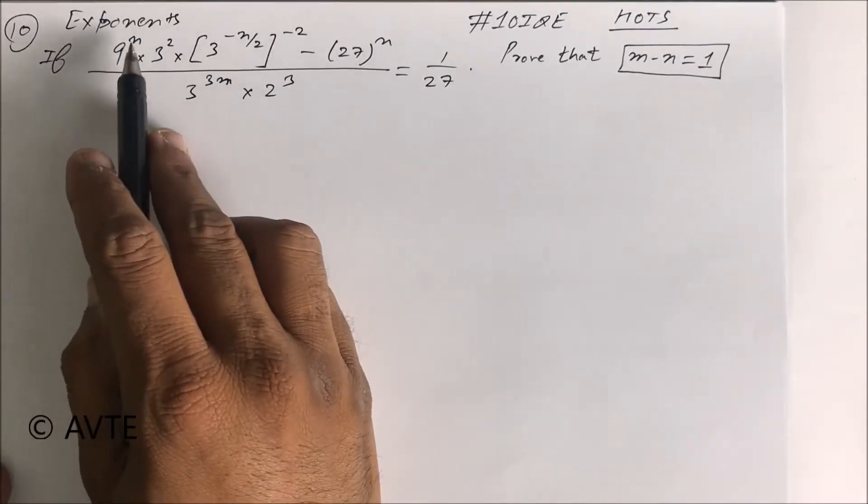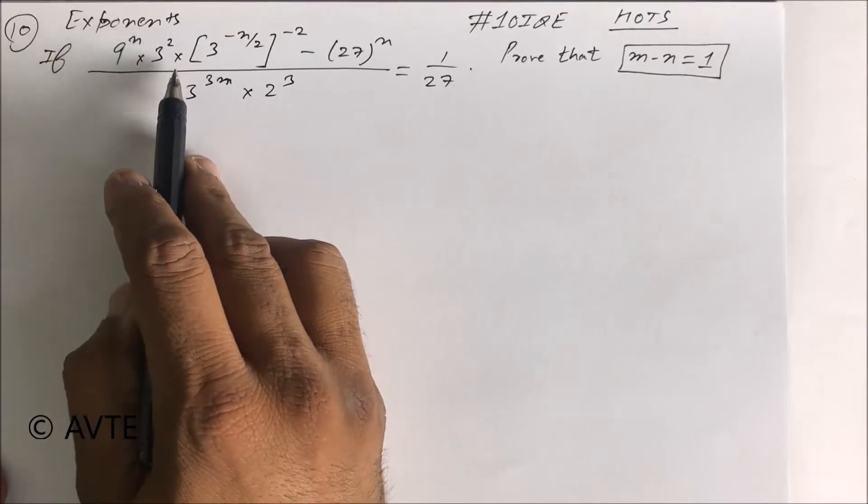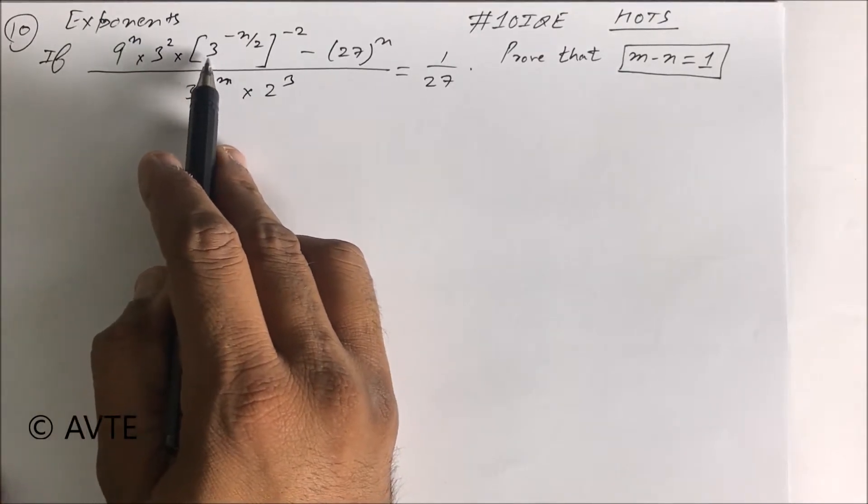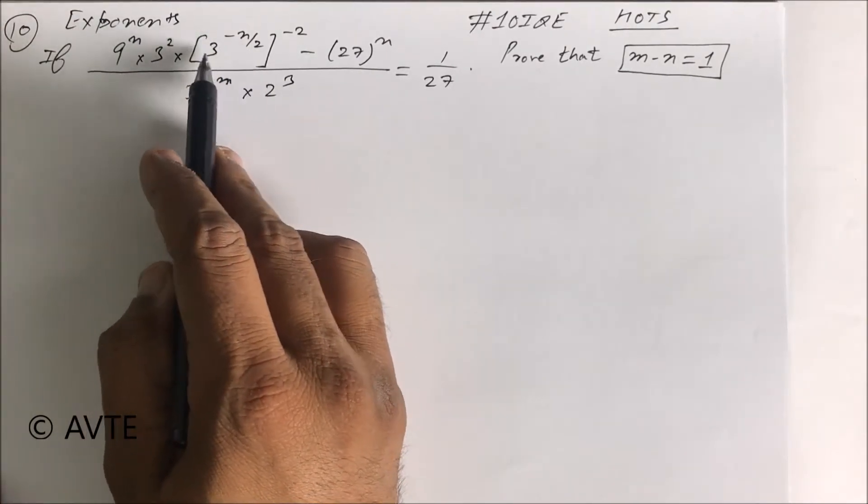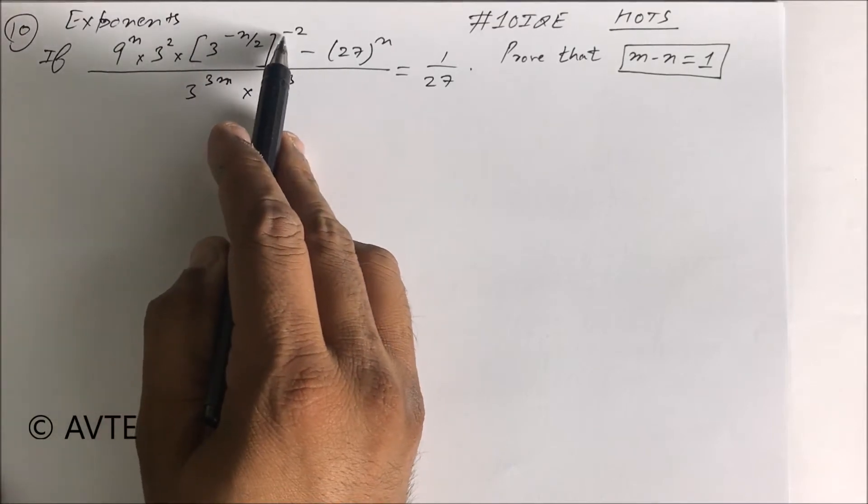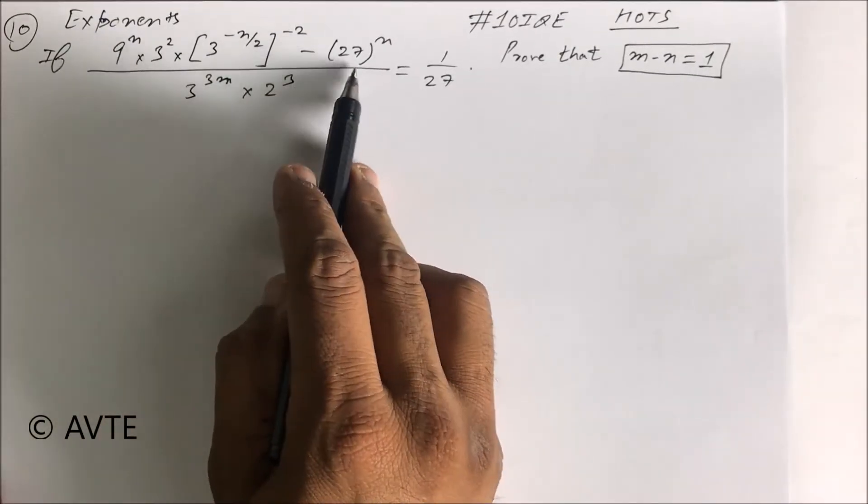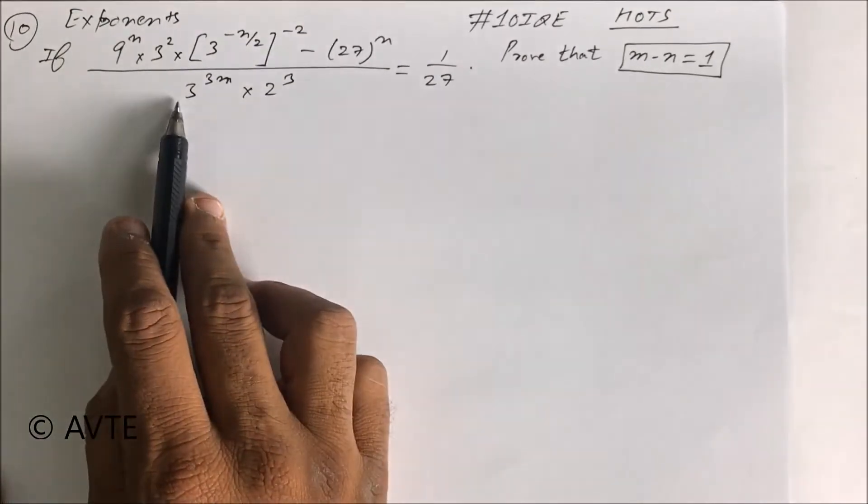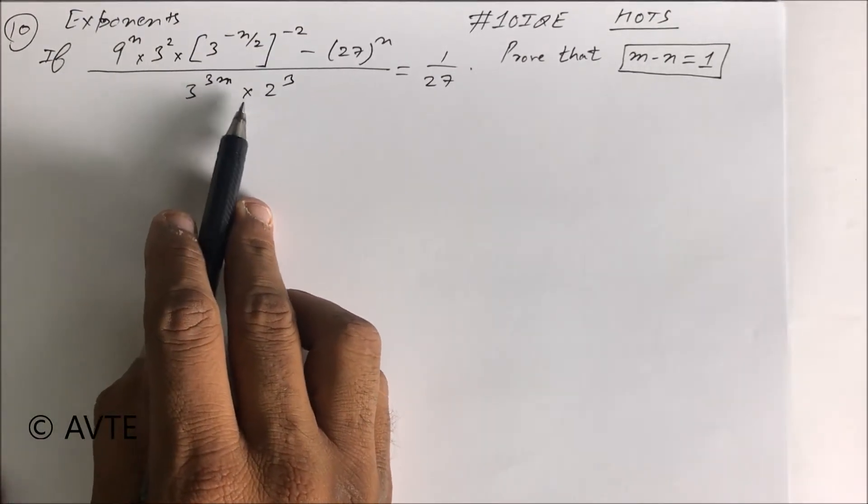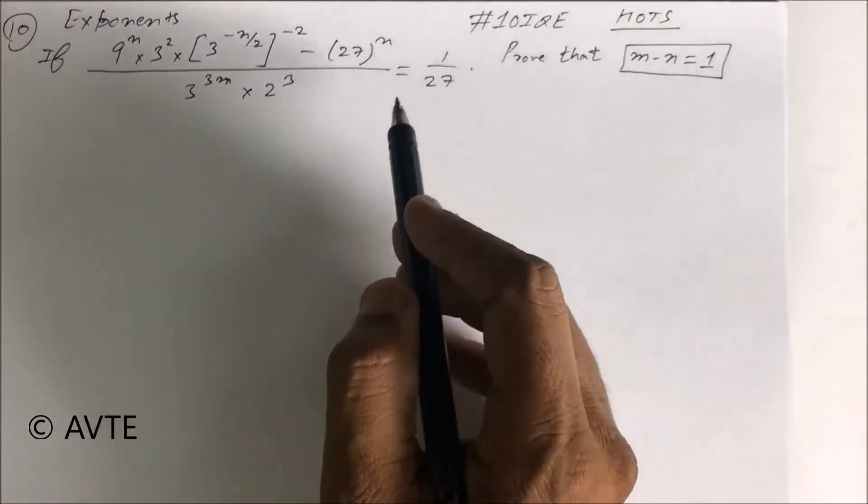The question is: 9 raised to power n into 3 square into 3 raised to power minus n by 2, whole raised to power minus 2, minus 27 raised to power n upon 3 raised to power 3m into 2 cube, is equal to 1 by 27.